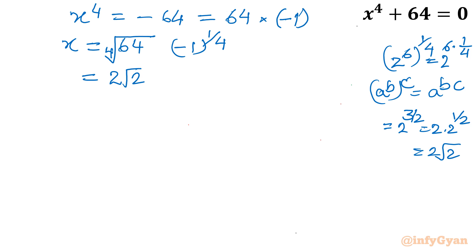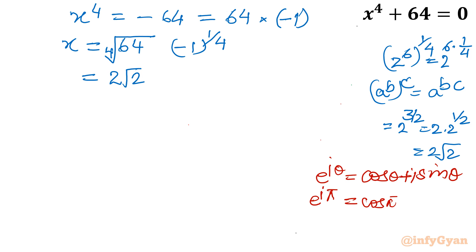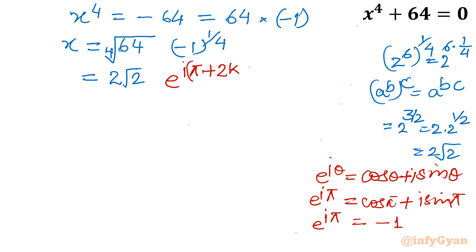For minus 1, we use Euler's identity: e raised to the power iθ equals cos θ + i sin θ. If we put θ = π, this becomes cos π + i sin π, and since cos π = −1 and sin π = 0, we get e raised to the power iπ. For the general solution we write e raised to the power i(2kπ + π), and then raise it to the exponent 1/4. This is the most important step.